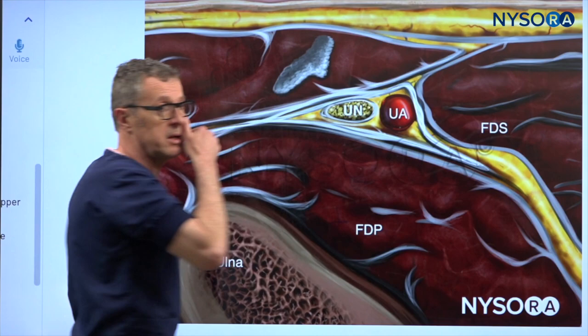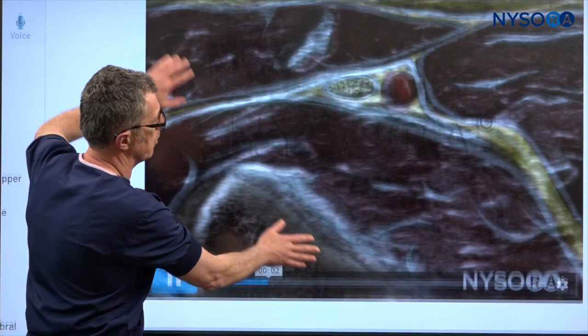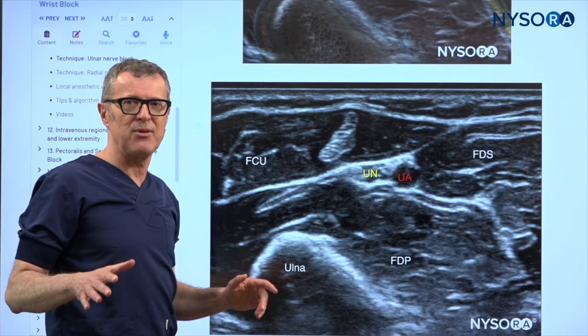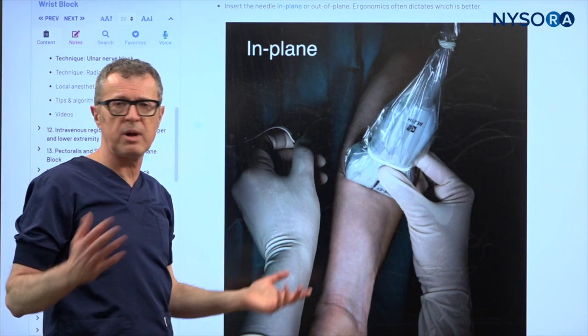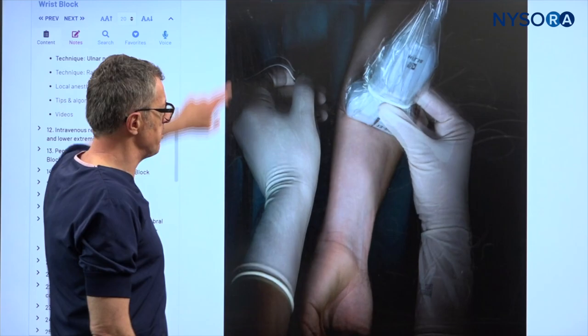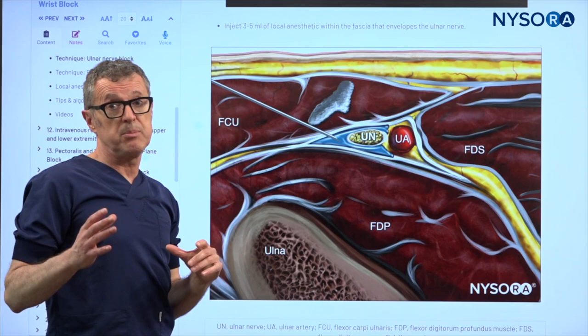Not around the ulnar nerve itself — an injection in between those fascial sheets is what we're aiming for when performing the ulnar nerve block. Let's go back to Next Level NYSORA. Here's the ulnar artery and ulnar nerve. We're going to perform this block in-plane, though either in-plane or out-of-plane techniques can be used.